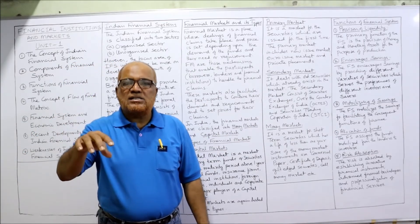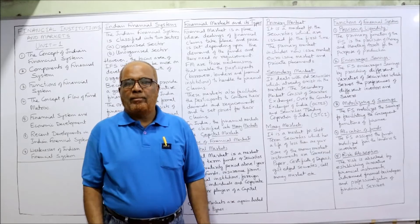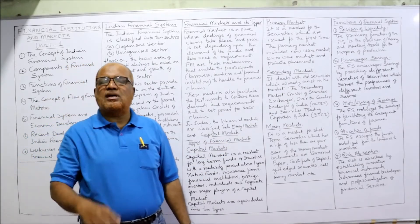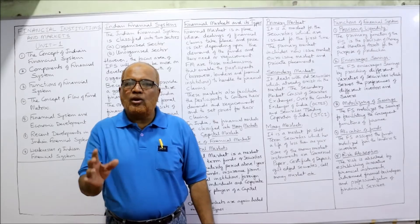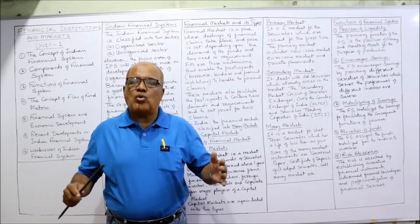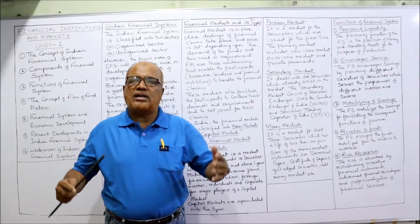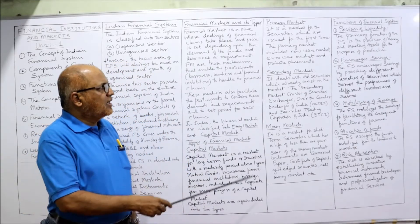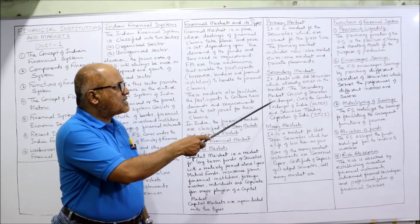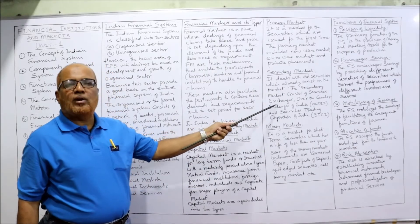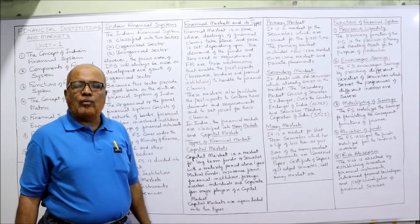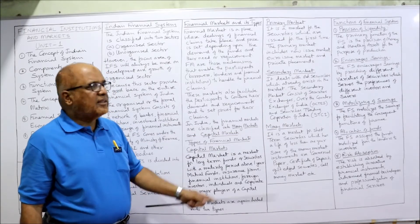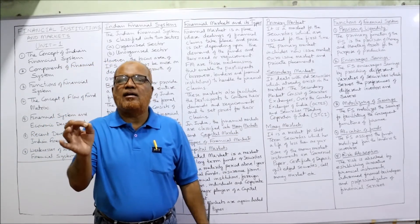The secondary market is where existing securities are bought and sold — old securities are purchased and sold. That market is called the secondary market, which is the stock exchange. In every country there are stock exchanges where old securities are bought and sold. The secondary market consists of securities exchanges, over-the-counter (OTC) exchanges, and the Securities Trading Corporation of India — these are examples of the secondary market.